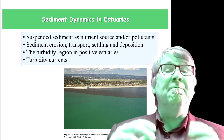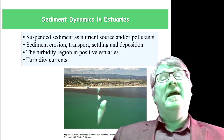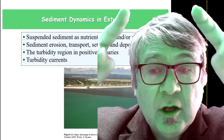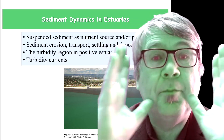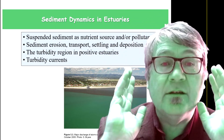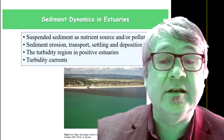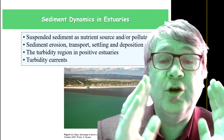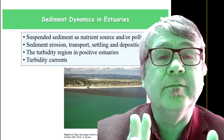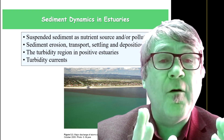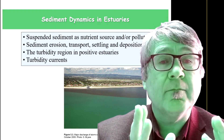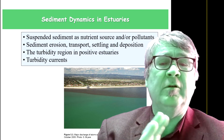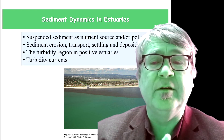In positive estuaries, there is a special feature called the turbidity region — a very important turbidity region. How does it form? What's the problem with these turbidity regions?